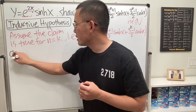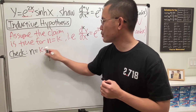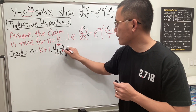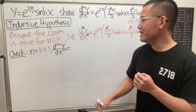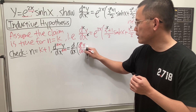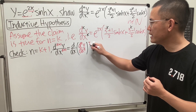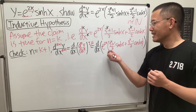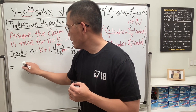Next we check for the next derivative, namely when n equals k plus 1. We want d-(k+1) y over dx-(k+1), and to get that we just differentiate the previous, k-th derivative. We can write it as the derivative of the k-th derivative, and using our inductive hypothesis we substitute the expression — so we differentiate this product using the product rule again.